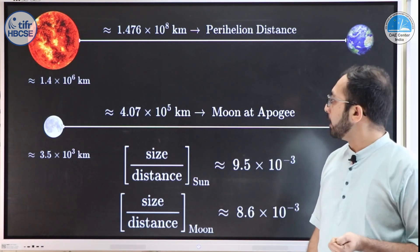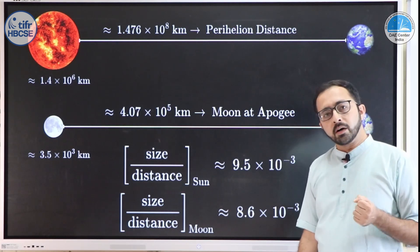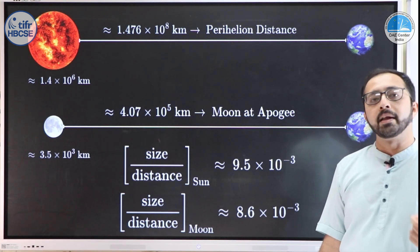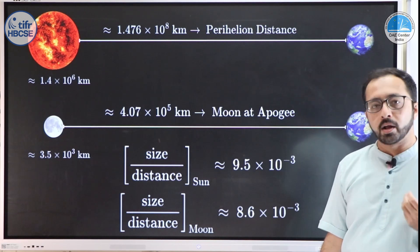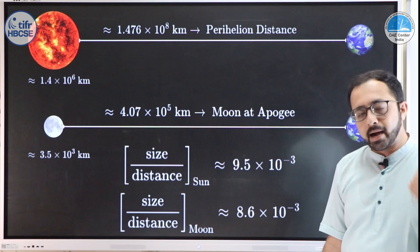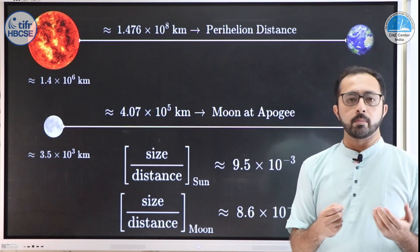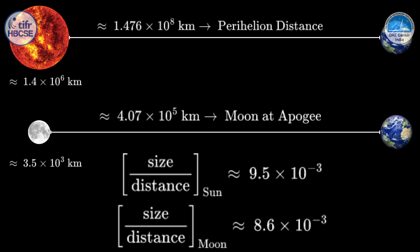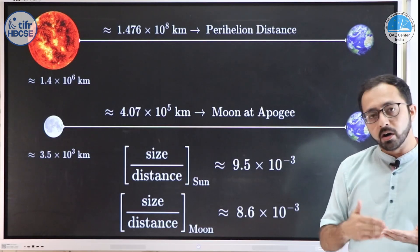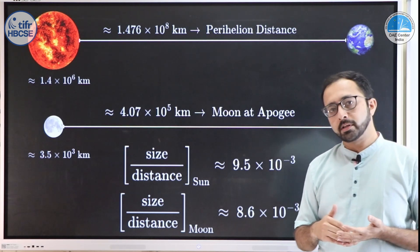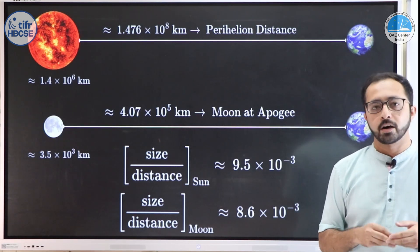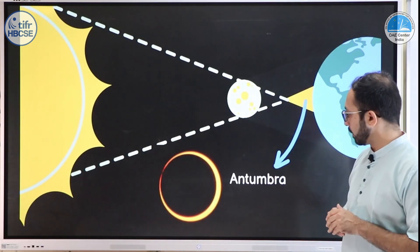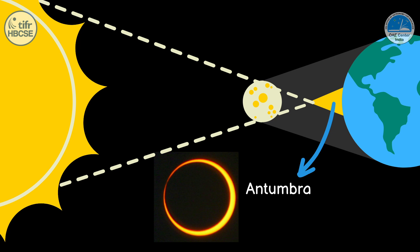If the earth is at perihelion — closest to the sun — you see a larger solar disk. If at that same time the moon is at apogee — farthest from earth — the angular size of the moon is smaller. The size-to-distance ratio changes: the lunar disk subtends a smaller angle and the solar disk subtends a larger angle, and we see an annular eclipse. So for an annular eclipse, earth must be at perihelion and the moon at apogee. From the antumbra you see the annulus or ring of fire in the sky.